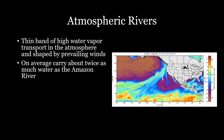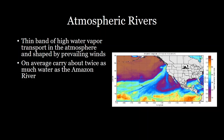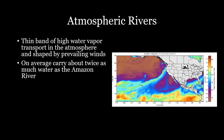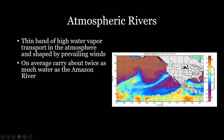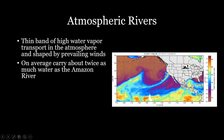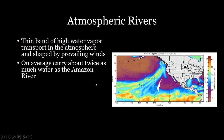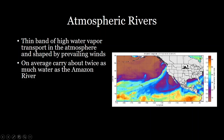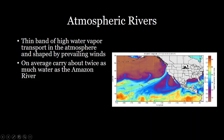Atmospheric rivers are thin bands of high water vapor transport in the atmosphere. They're shaped predominantly by prevailing winds that funnel this current of high water vapor, and they can carry a huge amount of water. Some atmospheric rivers carry as much as twice the water of the Amazon River, so these are huge volumes of water moving through the atmosphere.